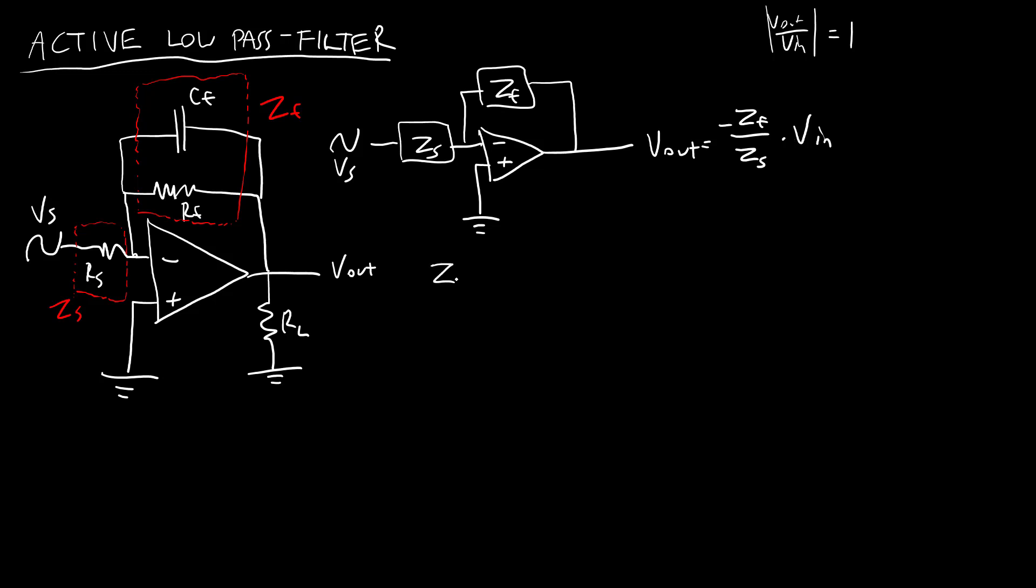So I know that my source resistance ZS is just equal to RS because the impedance of a resistor is just R.